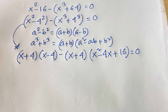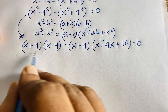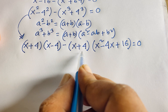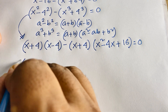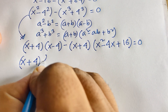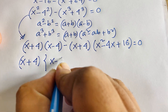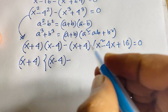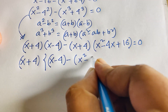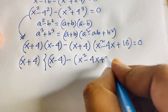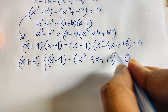Now I can see that (x plus 4) appears in both terms, so (x plus 4) is a common factor. Dividing out (x plus 4), the first term gives (x minus 4) and the second term gives (x squared minus 4x plus 16), so we have (x plus 4)[(x minus 4) minus (x squared minus 4x plus 16)] equals 0.